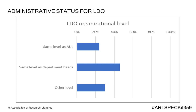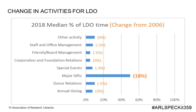Finally, the reporting lines for the Chief Library Development Officer were sought. Although there was some variation, the most commonly reported was at the department head level. Many of the responses to 'other level' were to units outside of the library, like central development. As you can see from this chart, all activities reflect fairly even portions of the time commitment for the Chief Library Development Officer with the exception of major gifts, which represents the majority of their time. These activities were also stable between 2006 and 2018, again with the exception of major gifts, which increased in time commitment by 18% during that period.